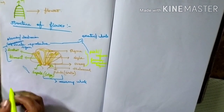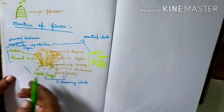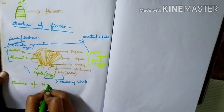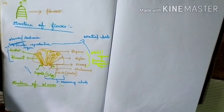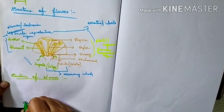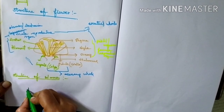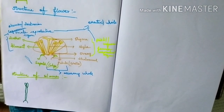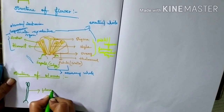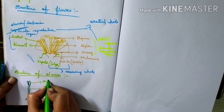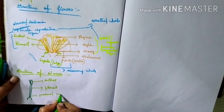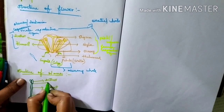Now let's see the structure of the stamen. The long stalk-like structure is called the filament, and the bilobed structures are called the anther. The end of the filament attached to the thalamus is called the proximal end, and the end of the filament attached to the anther is called the distal end.